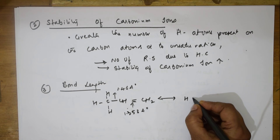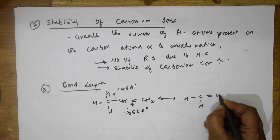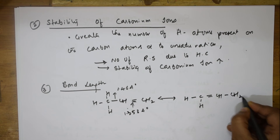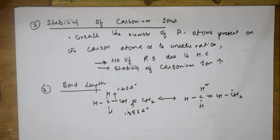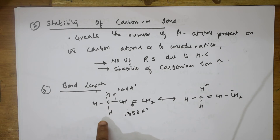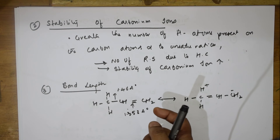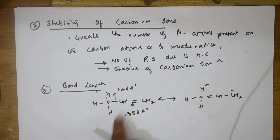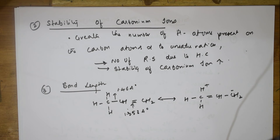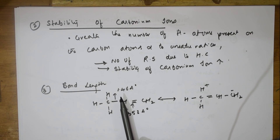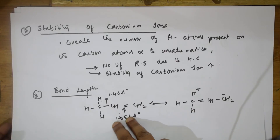When hyperconjugation occurs, this becomes CH with a shifted bond — because the electrons shift, this becomes H+. Normally, in propane, the C–C bond length is 1.54 angstroms. Here, the alkene has acquired partial double bond character due to hyperconjugation, so the C–C bond is shorter at 1.46 angstroms compared to propane's 1.54 angstroms. That is the third application of hyperconjugation.